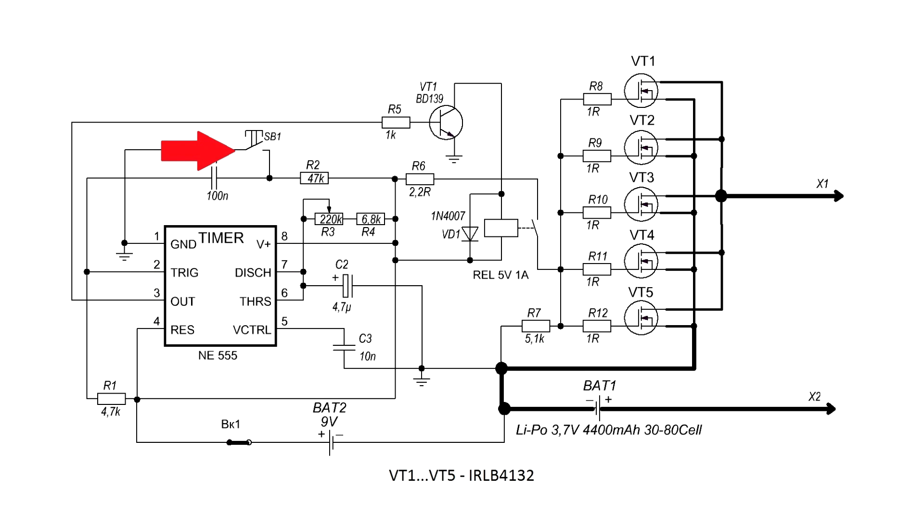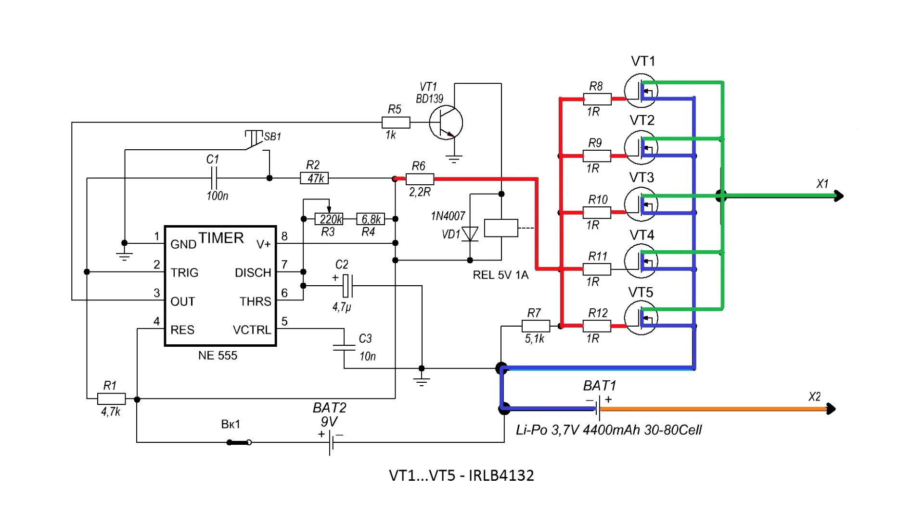When the button is pressed, from third pin the signal goes to the bipolar transistor. It opens and commutes the electromagnetic relay coil. The relay trips and plasma the power source goes to the gate of the field keys. They open and the current from the battery goes to the welding electrodes.